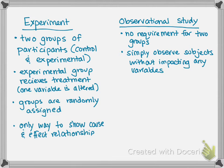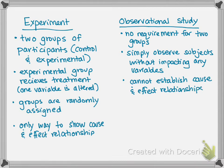There are two types of observational studies, but first one other thing: observational studies cannot establish cause and effect relationships, because we have not controlled for other variables. In an experiment, we've specifically designed it to compare the changing of one variable, but in an observational study, we're watching constant changing of many additional variables. There are so many variables in real life, so we cannot use an observational study to establish a cause and effect relationship about any type of change.